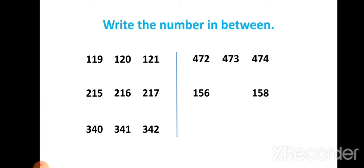Here we have 156 and 158. The between number is missing. We have to write the between number. So 157 is the between number of 156 and 158. That is our answer. Students, here given 407 and 409. The between number is missing. Which number comes here? It is 408. So 408 is the between number of 407 and 409.